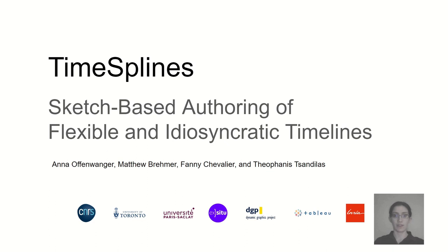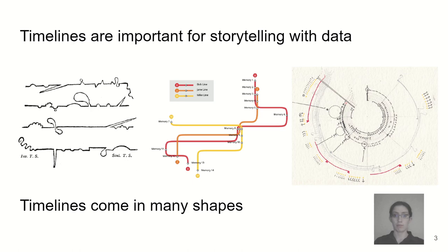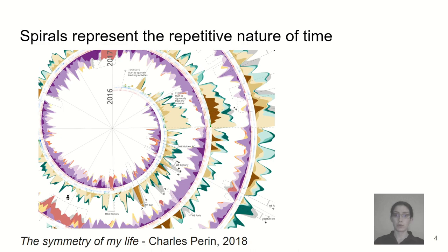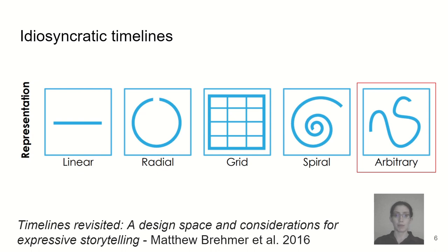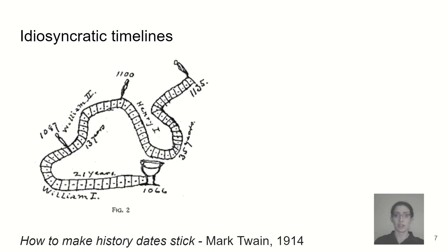Timelines are important for storytelling with temporal data, but standard linear timelines don't cover the wide range of conceptualizations of time. Previous research has explored the narrative function of nonlinear timelines, such as spirals representing the cyclical nature of temporal events and custom shapes improving memorability. In this work, we explore the potential of idiosyncratic timelines, which are similar to Brammer-Eyal's classification of arbitrary timelines, but focus on the notion that a nonlinear timeline will often encode a meaning unique for the author.